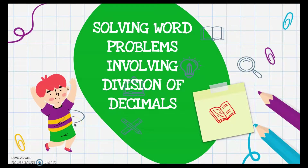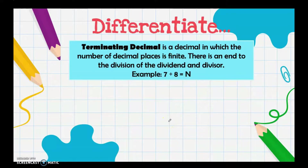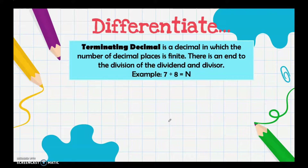Good day everyone. Today we will be discussing solving word problems involving division of decimals. We are going to differentiate different kinds of decimals. First, we have terminating decimal — it is a decimal in which the number of decimal places is finite.